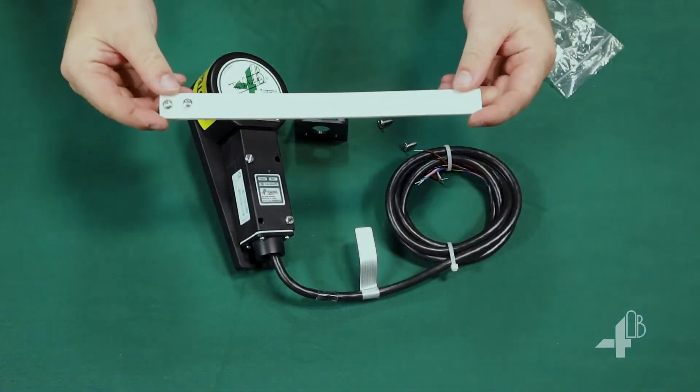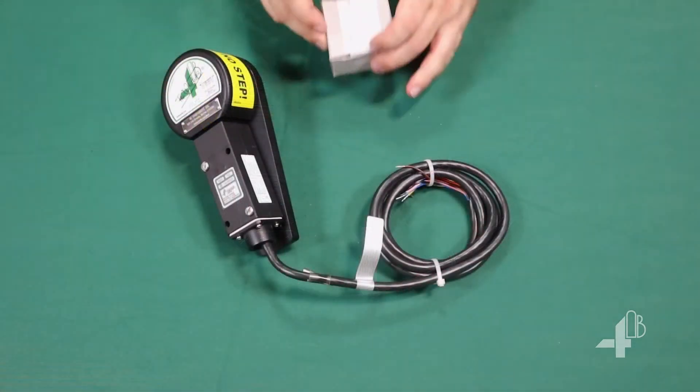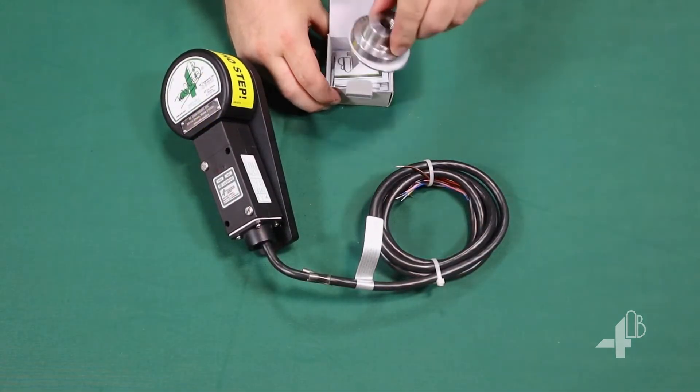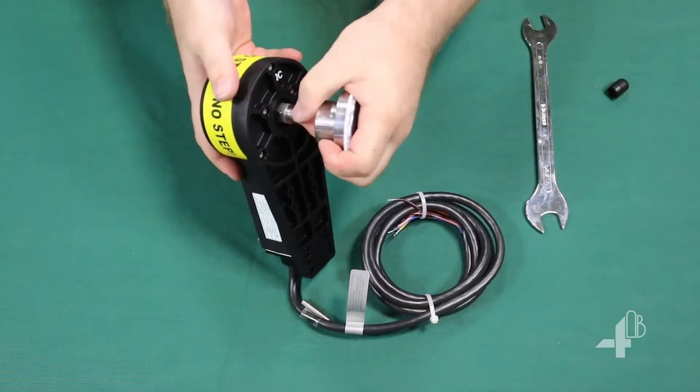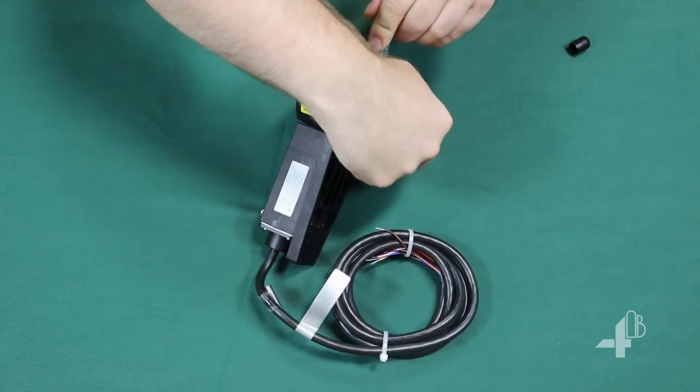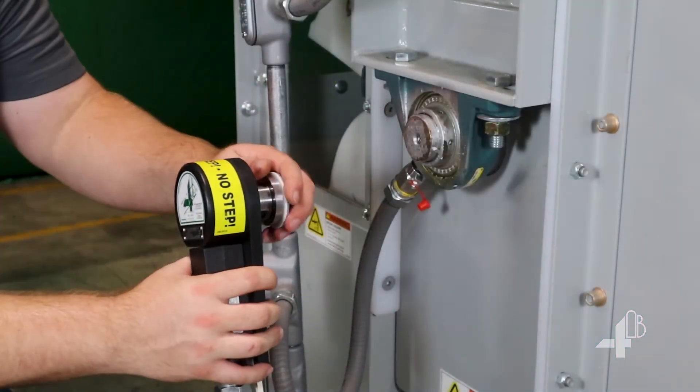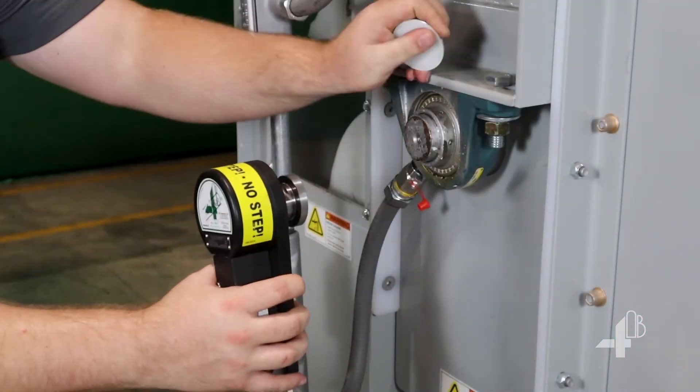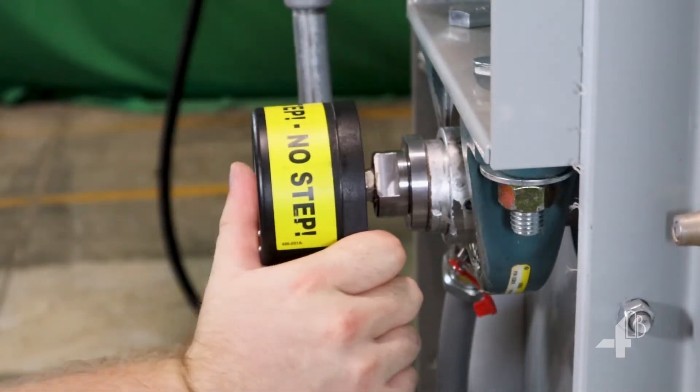If required, the flexible strap can be attached to the machine. We suggest using the MagCon for easier installation of the Whirligig. Instead of drilling and tapping the shaft for half-inch UNC 13 thread, simply screw the MagCon onto the Whirligig and snap it onto the shaft. Watch your fingers. This magnet is really strong.